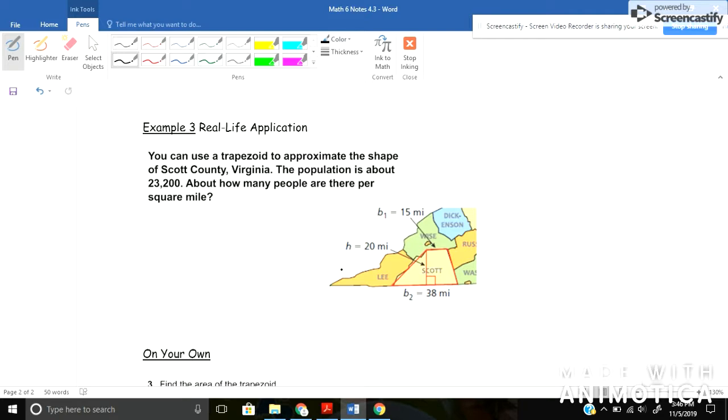Okay, so let's find the area first: half times my height, my height is 20, times my bases added together, so 15 plus 38 for my two bases. Okay, doing a little bit of multiplying then and adding, 15 plus 38 will give me a total of 53, times 20, times a half. Well half of 20 is 10, and 10 times 53 would be 530, and that will be square miles.